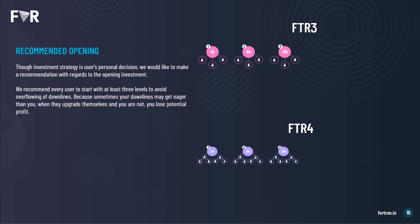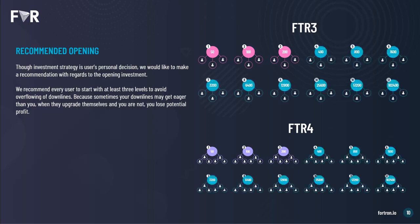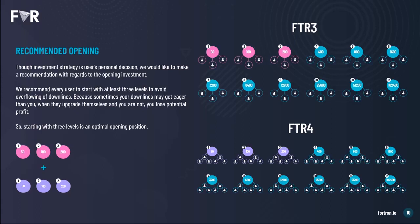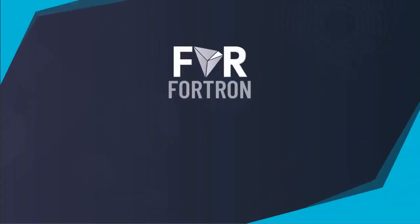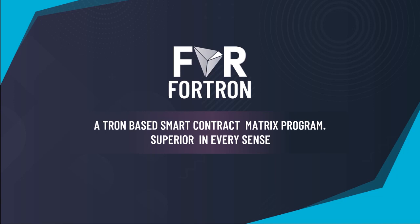Your investment strategy is your own personal decision, but we recommend that every user starts with at least three levels to avoid overflow of downlines — because sometimes your downlines may get more eager than you with their upgrades and you will lose out on potential profits. The investment levels on FTR3 and FTR4 plans are the same: level 1 is 50 TRX, level 2 is 100 TRX, and level 3 is 200 TRX. So to open three levels, that's a total of 350 TRX per plan, or 700 TRX in total.